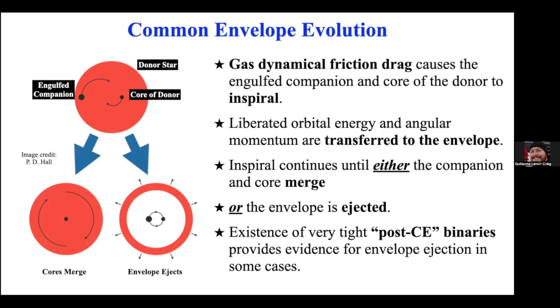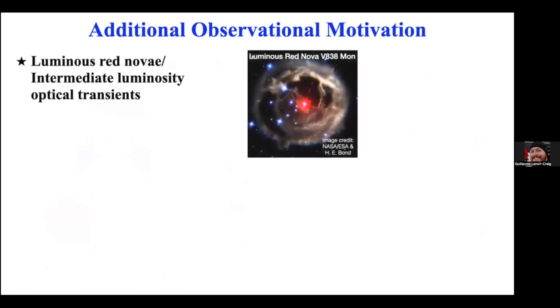For example, if you have a white dwarf you know it comes from a giant star, but if the binary separation is smaller than the radius of the original giant star, something must have happened to bring them into that tight orbit. There are other observational motivations as well. There's something called luminous red novae, also called intermediate luminosity optical transients — they have many names because we don't understand them very well yet. They're probably all part of the same general phenomena, but not yet fully classified.